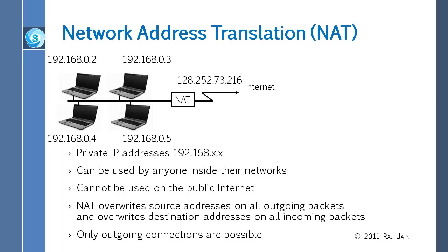The real solution to the address shortage is NAT — Network Address Translation. NAT takes your inside private address and translates it to an outside public address. Anything coming from the outside is translated back. There are two kinds of addresses — private and public — and NAT is the one that does the translation between them.